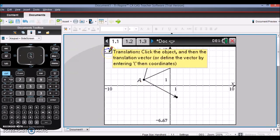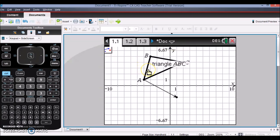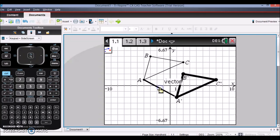So if you hover over any of these buttons in the upper left-hand corner, it will let you know the directions for how to use that feature. So I'm going to click the object and then the translation vector. So I'm going to select triangle ABC and then my vector, and notice it gives me a preview of what that shape is going to look like, and it also provides me with prime notation.